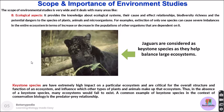This brings us to the concept of keystone species. Keystone species are those which have a high impact on a particular ecosystem and are very critical for its overall structure and function, as well as for maintaining balance in an ecosystem. If removed, they directly or indirectly influence the population of other species, and many ecosystems would fail to exist without them. A common example is the predator-prey relationship — if you remove a predator, it drastically influences prey populations. The jaguar is one example of a keystone species as it helps balance large ecosystems.